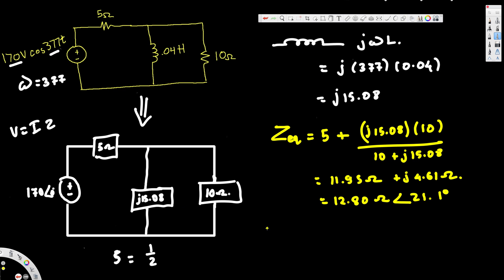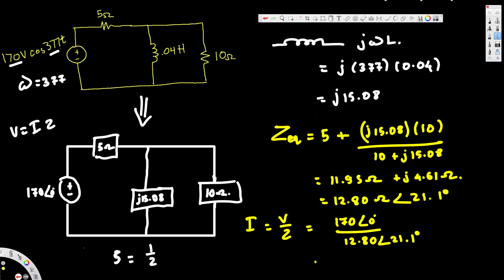Now we can find the current. Current I = V/Z. Our voltage is 170 at 0 degrees, divided by 12.80 at 21.1 degrees. Calculating this gives 13.3 amperes at negative 21.1 degrees.